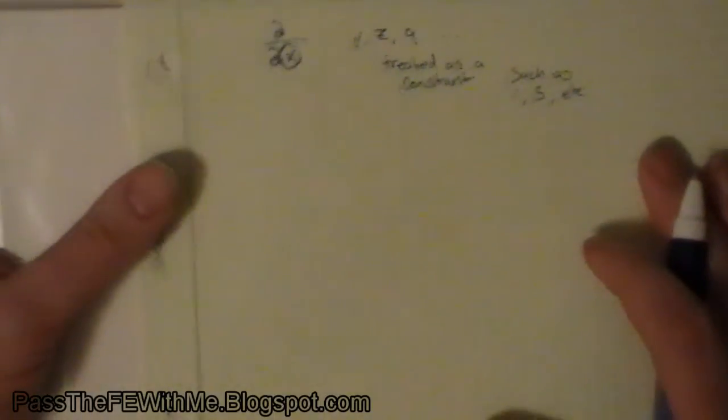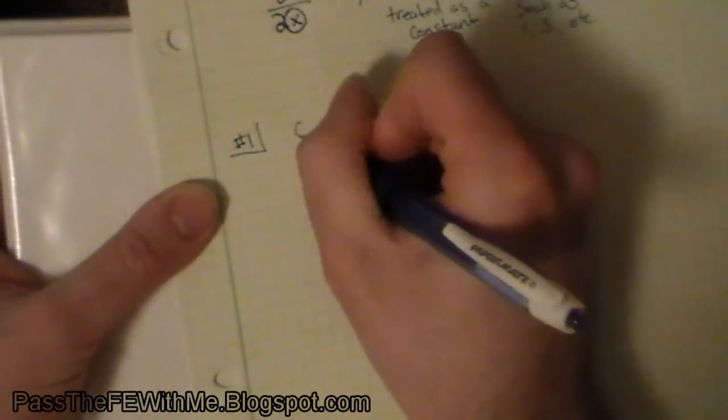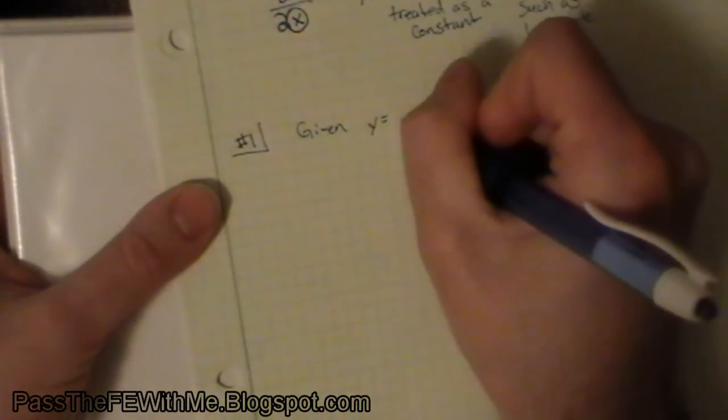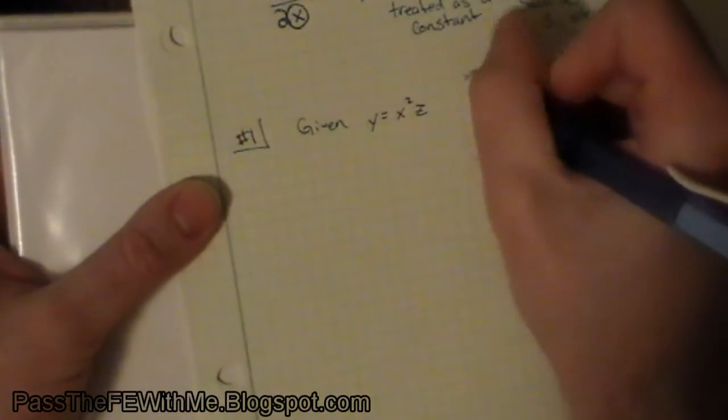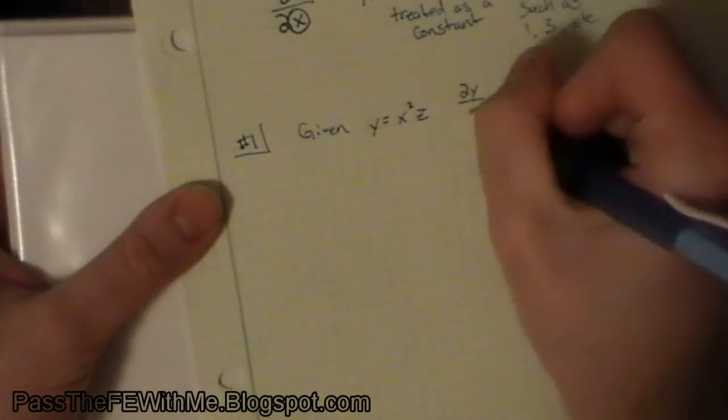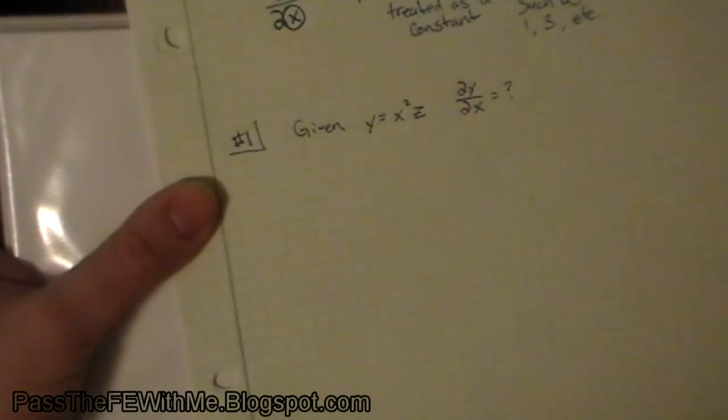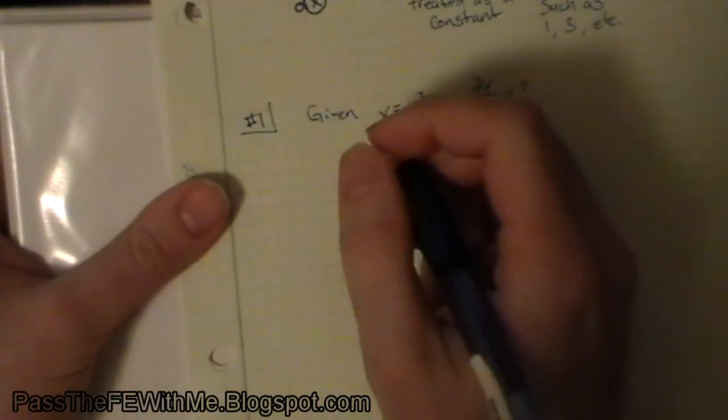Probably the best way to explain this is to just go ahead and do some examples. Let's start with a really simple one. If you're given y equals x squared z, and you want to find the partial derivative of y with respect to x, we can do this fairly easily.